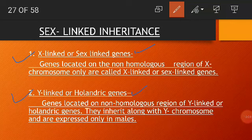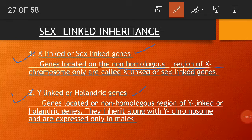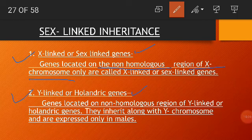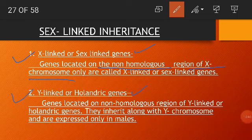X-linked genes are located on the non-homologous region of the X chromosome and have no corresponding allele in the Y chromosome. The recessive sex-linked genes in human beings are responsible for sex-linked characters such as hemophilia, color blindness, night blindness, myopia, and muscular dystrophy.